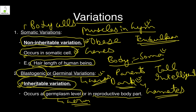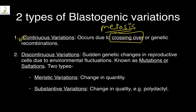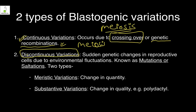Blastogenic variations can be of two types. Continuous variation is due to crossing over of chromosomes — when two chromosomes come together they cross over certain parts. This is also called genetic recombination and will be covered when we deal with meiosis.